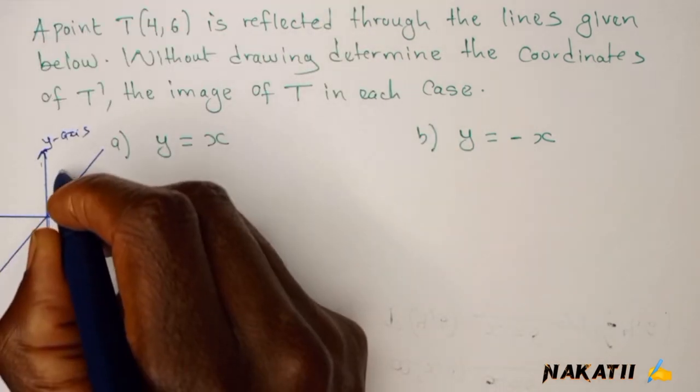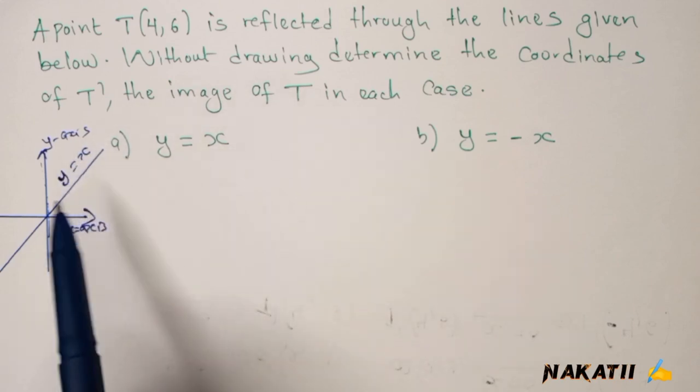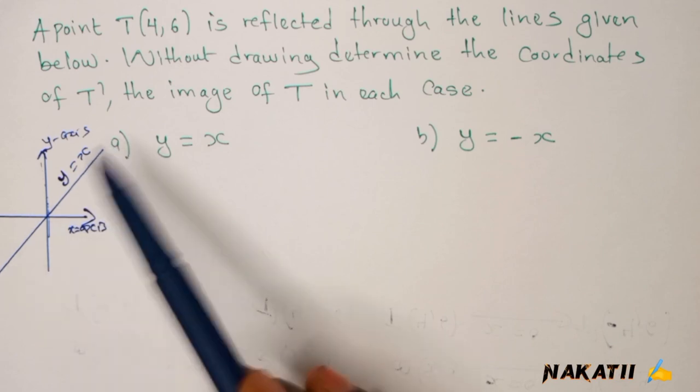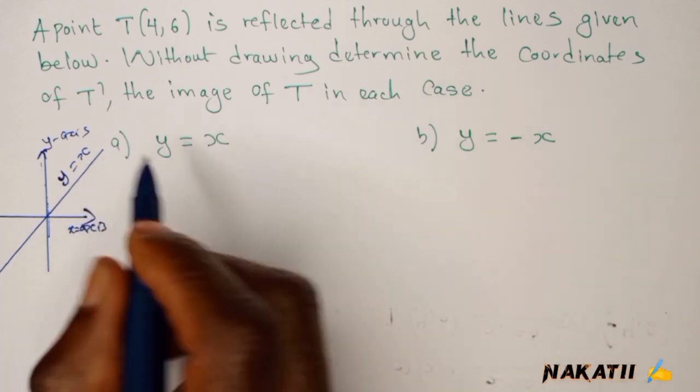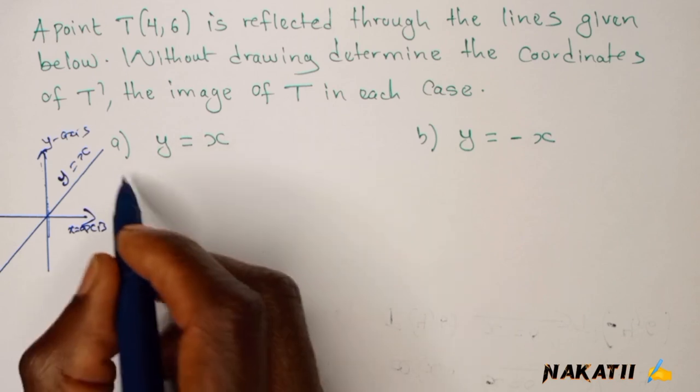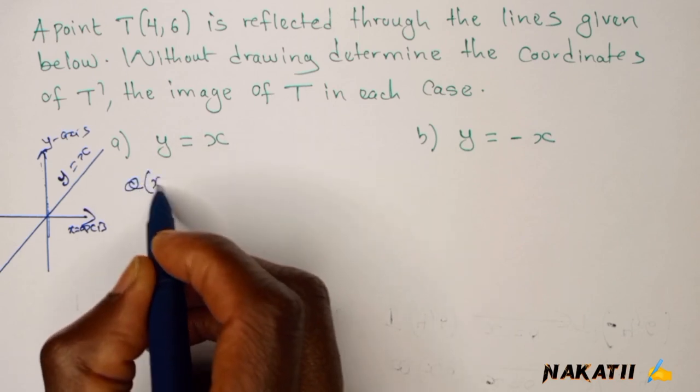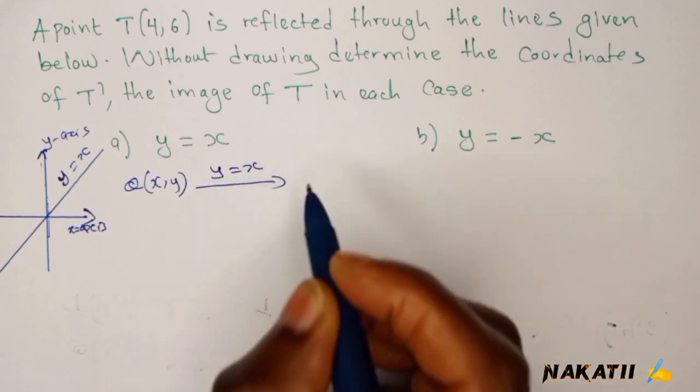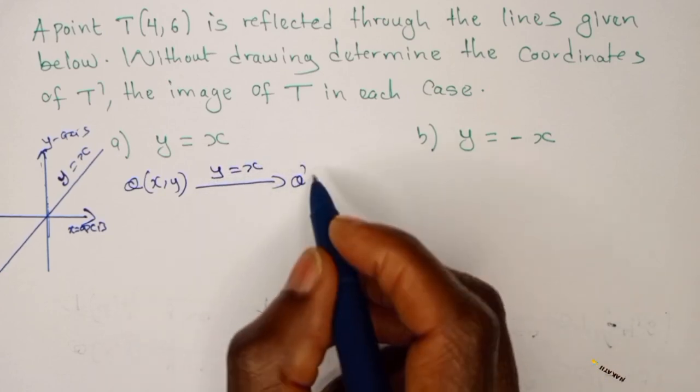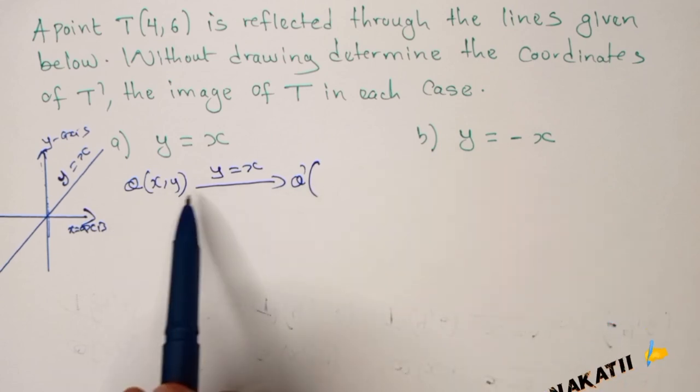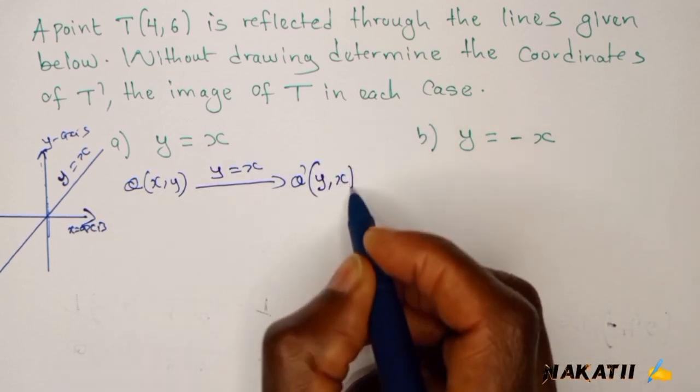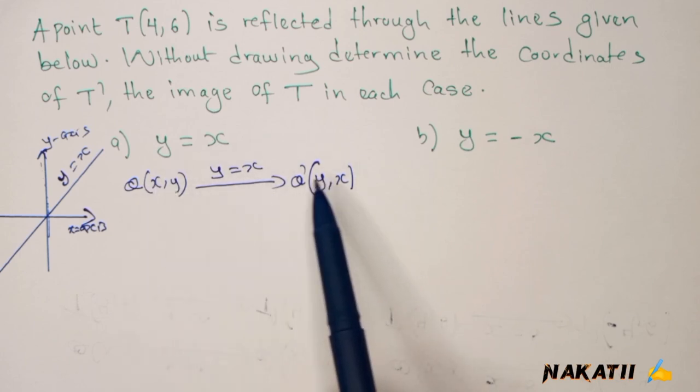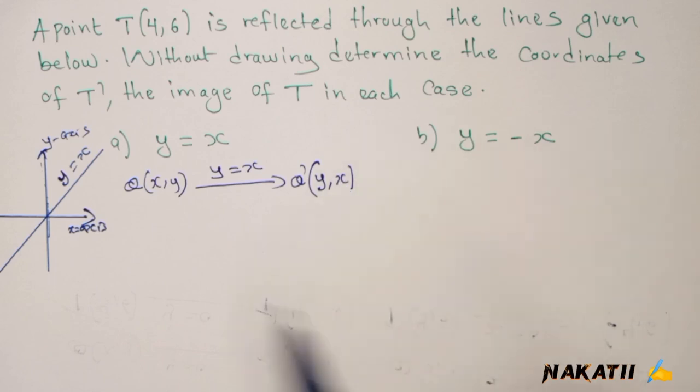This is the line y equals x, meaning that when x is 2, y is 2, and so forth. If I reflect any point on this line, we can use a formula and say if you have a general point Q, for example (x,y), you reflect it on line y equals x, you will have your image Q'. What you do is you just interchange the y and the x coordinate, so the value of y comes first and then followed by the value of x.